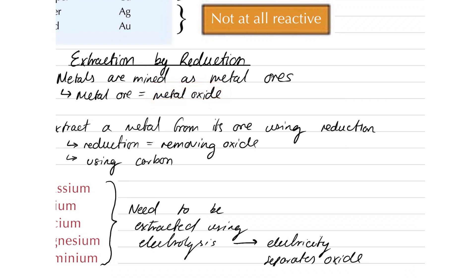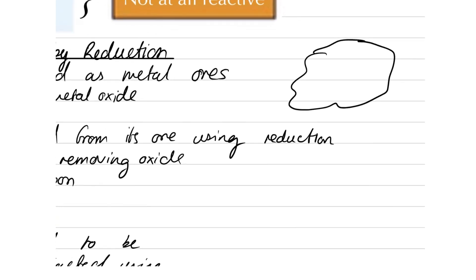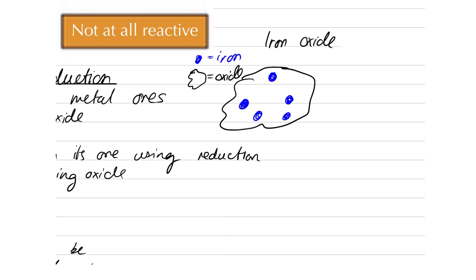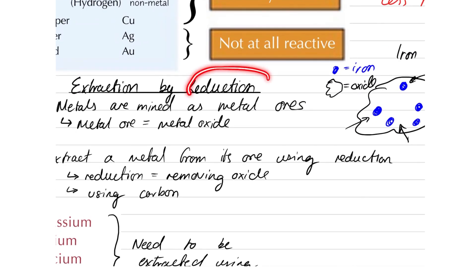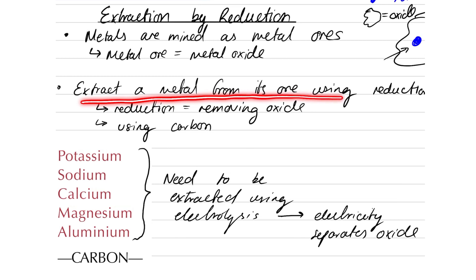For example, when I mine something — suppose this is some rock that I've mined — in this rock there are tiny bits of iron. From this whole sample that I've mined, only these bits are iron, and everything else is oxide. So, this is an iron oxide ore, and only has bits of iron separated in many different places. Everything else is oxide — that means it's oxygen, a solid form of oxygen. So, how do we separate the iron from the iron oxide? We have to undergo a reaction by reduction. We extract a metal from its ore using reduction, which simply means removing the oxide.